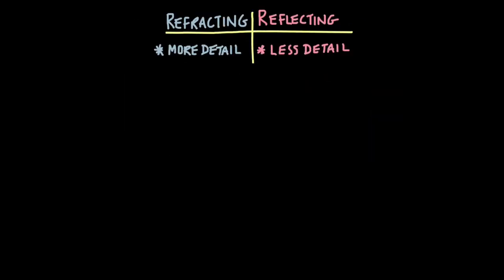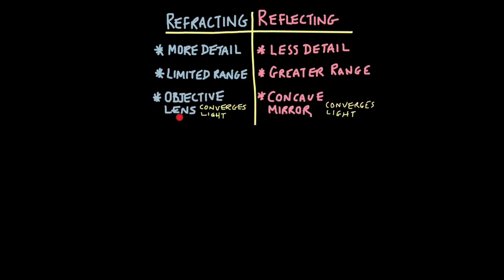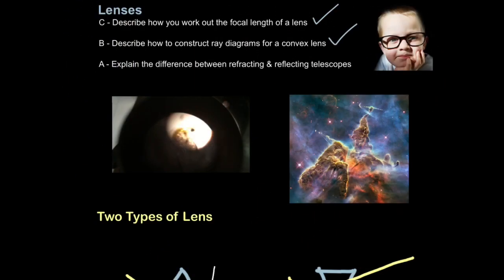Here are the key differences between refracting and reflecting telescopes. Refracting telescopes give more detailed images, whereas reflecting telescopes are less detailed, because refracting uses a lens and reflecting uses a mirror. Due to their smaller apertures, refracting telescopes have a limited range and can't see faint stars easily. Reflecting telescopes with much larger apertures have a greater range. Refracting telescopes use objective lenses to collect and converge light, whereas reflecting telescopes use concave mirrors to converge light. Both have an eyepiece lens which magnifies the image.